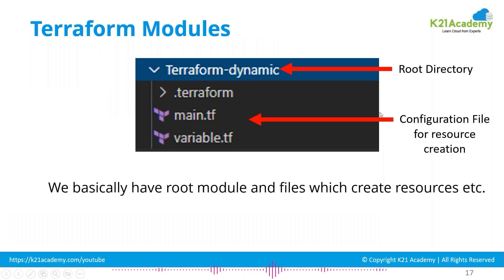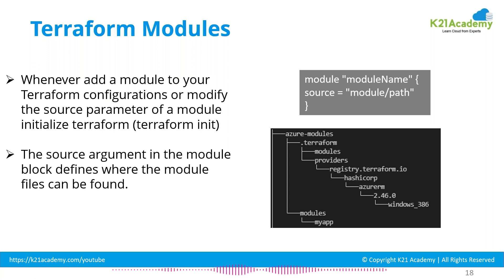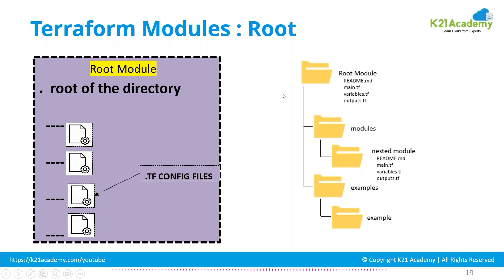To visualize this: say you have a 'terraform-dynamic' folder, which is your root directory containing your configuration files — this is known as the root module. You can then create modules accordingly within it. Let me walk through a simple example where we create one EC2 instance using a module, and I'll show you how modules can give you multiple inputs, multiple outputs, and how you can call them at multiple places.